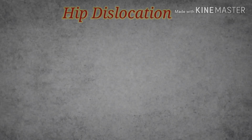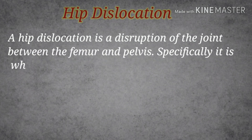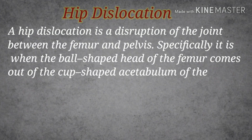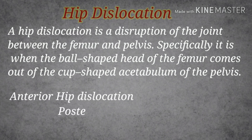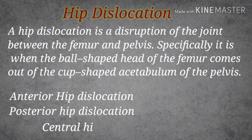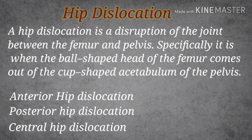Today we are going to discuss hip dislocations. A hip dislocation is a disruption of the joint between the femur and the pelvis — specifically when the ball-shaped head of the femur comes out of the cup-shaped acetabulum of the pelvis. It may be an anterior hip dislocation, a posterior hip dislocation, or a central hip dislocation. Anterior types include anterior superior and anterior inferior.